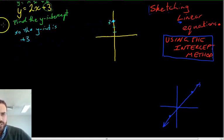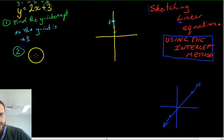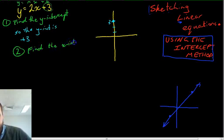Now, the second step is slightly more difficult. Step 2, when it comes to the intercept method, is a little more complicated. It's finding the x-intercept.